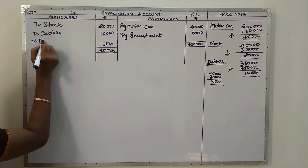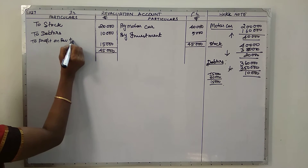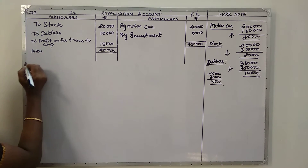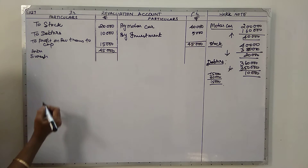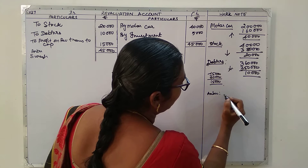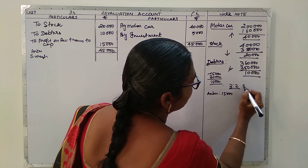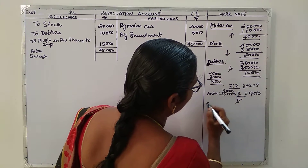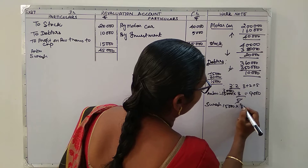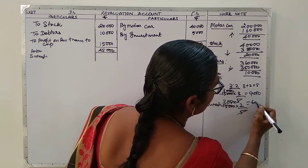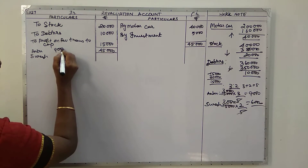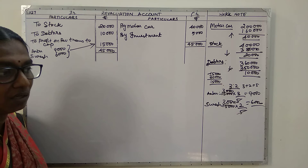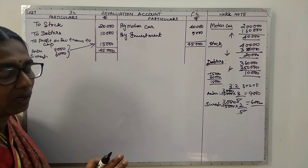The profit on revaluation of fifteen thousand is transferred to capital accounts of Anbu and Suresh in the old ratio 3:2. So fifteen thousand × 3/5 = nine thousand for Anbu, and fifteen thousand × 2/5 = six thousand for Suresh. With this the revaluation account comes to a close.